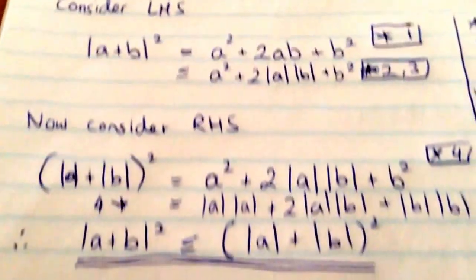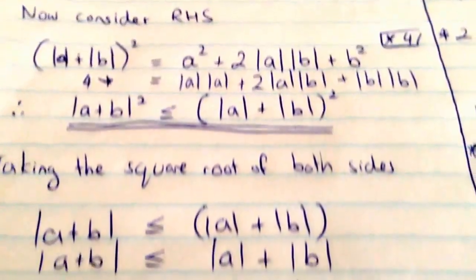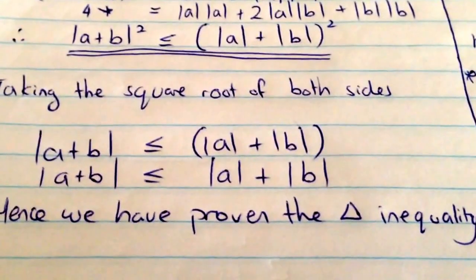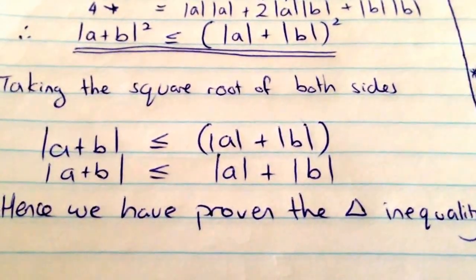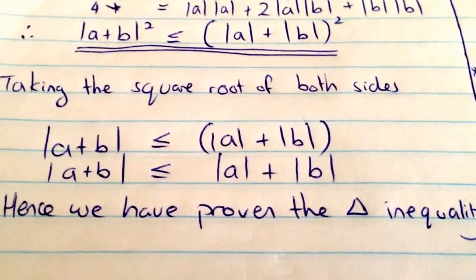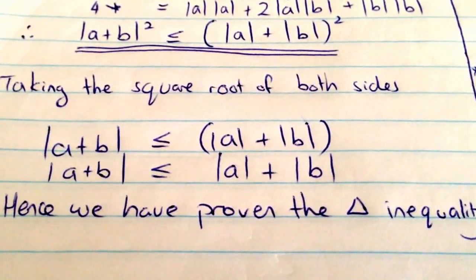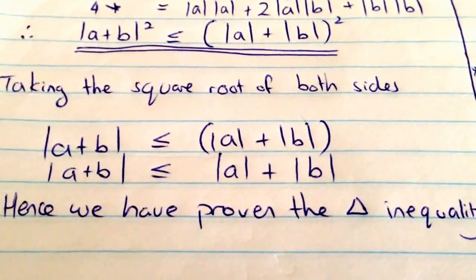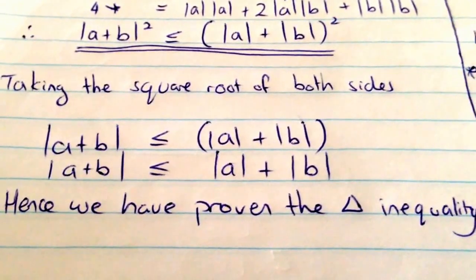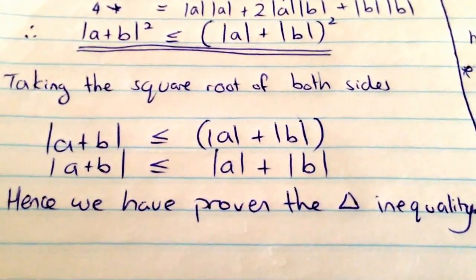But remember that these are the squares. There's one last step that we have to take, and that's taking the square root of both sides. So what we end up with is the triangle inequality that we know and love, which is mod a plus b is less than or equal to mod a plus mod b.